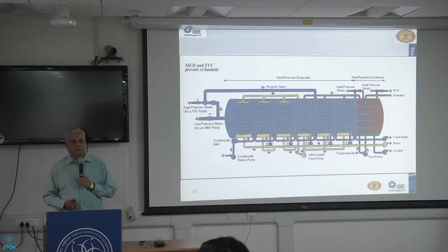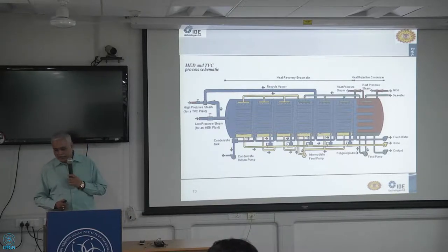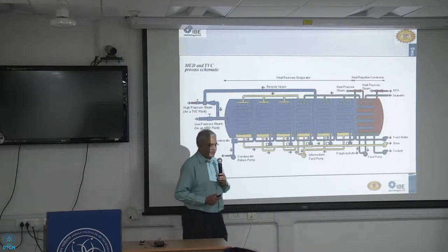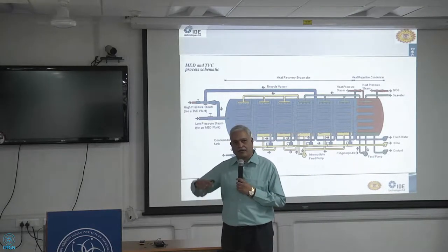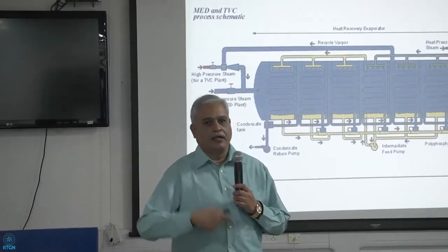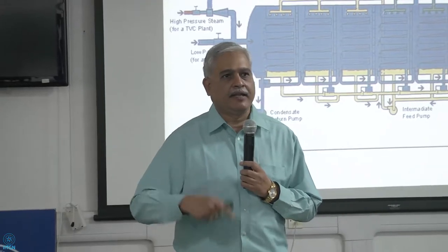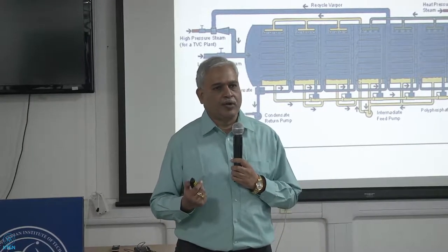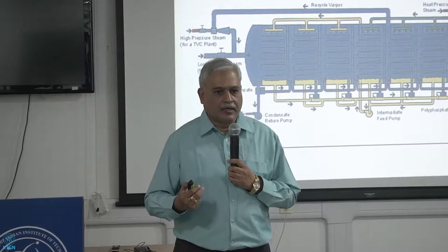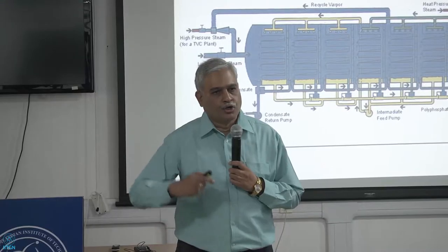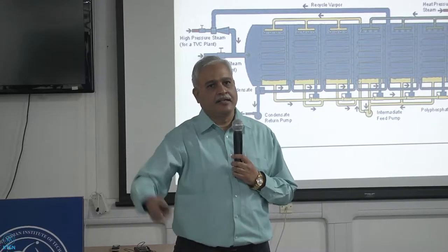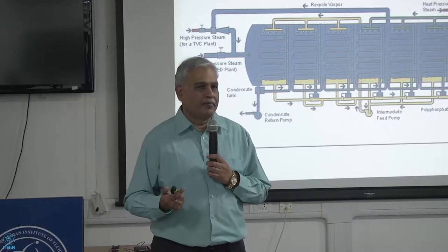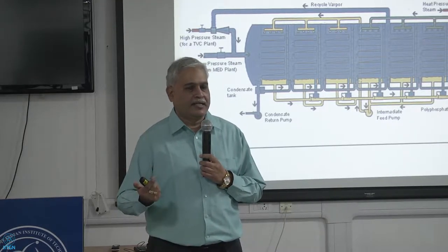In an MVC plant there is a limitation imposed by the compressor itself. These are among the world's largest compressors, pulling air from one side of the MVC unit and recirculating it throughout the system. We operate at very low pressures — about 0.1 to 0.15 ATA inside — because we are evaporating at less than 72°C. There is a limit on the compressor size, and that is why there is a capacity limit for MVC units. 3,000 cubic meters per day is the largest MVC unit ever built.